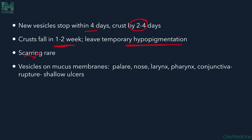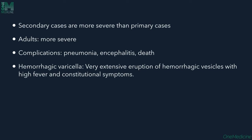Vesicles from mucous membranes can be seen on the palate, nose, pharynx, and conjunctiva; they rupture to cause shallow ulcers. Secondary cases are more severe than primary cases. Adults are more severely affected. Complications include pneumonia, encephalitis, and death.